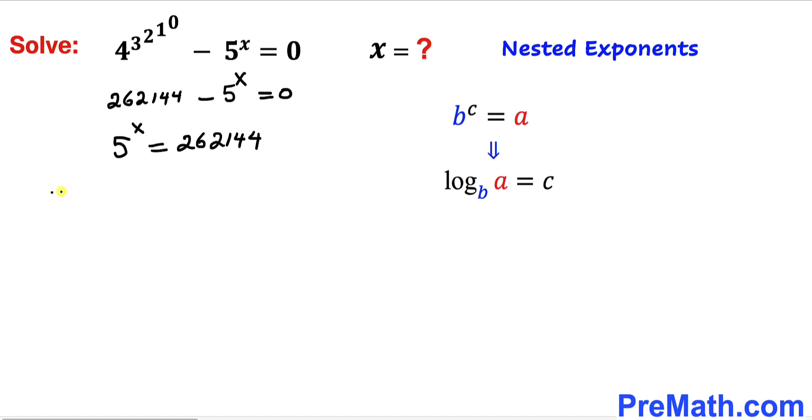So therefore we can write x = log_5(262,144), and that is going to be approximately equal to 7.7522 as well.